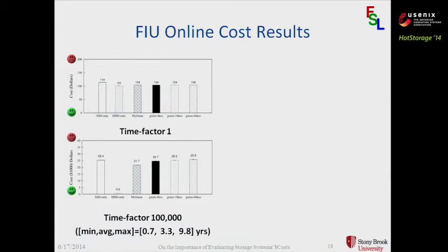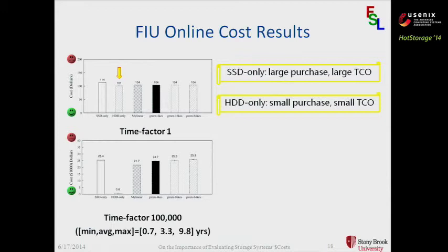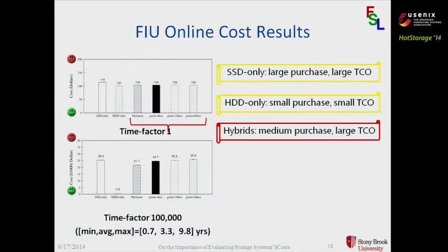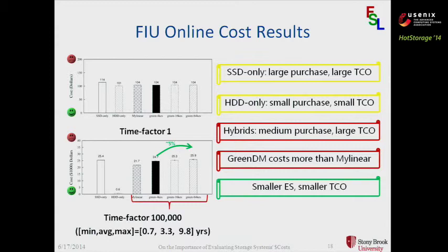What can we observe? For the SSD-only drive, it has large purchase cost and large total cost of ownership, because this is a write-intensive workload — it contributes more to SSD accesses, which contributes more to SSD replacement cost. For the HDD-only drive, it has small purchase cost and small total cost of ownership. For the hybrids, they still have medium purchase cost and large total cost of ownership. GreenDM costs more than my linear. Looking at different configuration parameters — in this case, extent size — smaller extent size actually leads to smaller total cost of ownership, because smaller extents cause fewer SSD accesses.